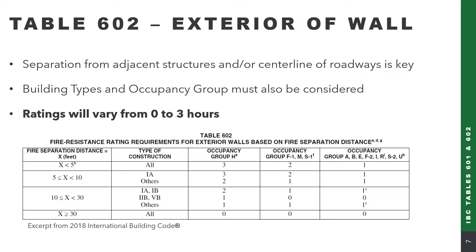Looking at Table 602, this focuses on the exterior wall. Key considerations include the separation from adjacent structures — if buildings are across the street from each other, the width of the roadway is key. Building types and occupancy group must also be considered. Based on this, fire ratings can vary anywhere from 0 to 3 hours.